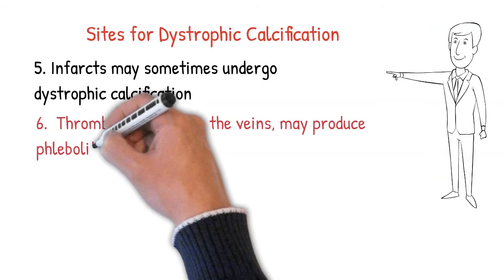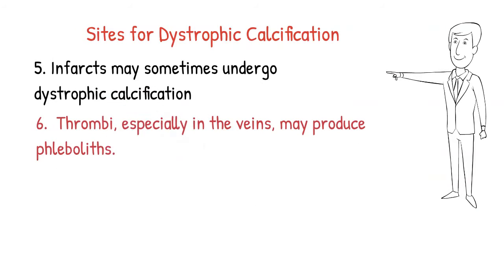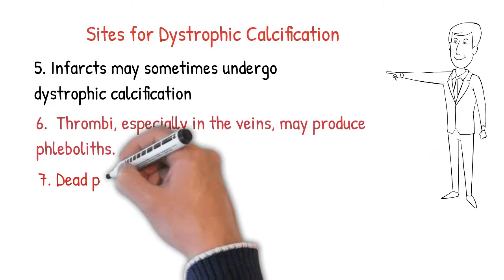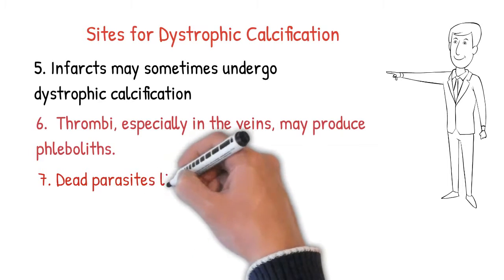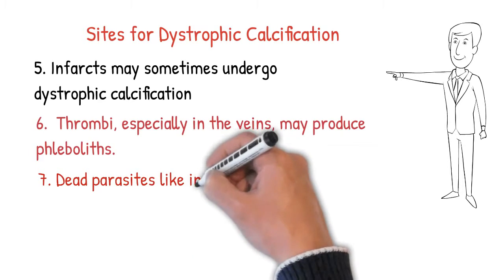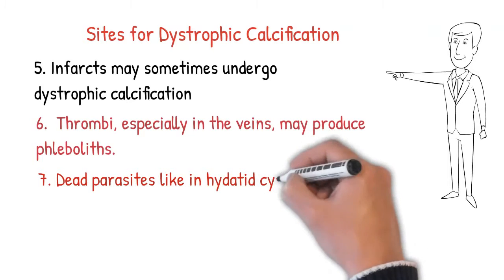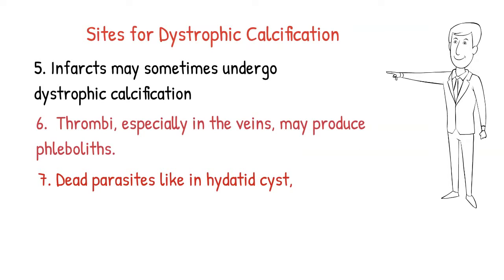In case of thrombi, there is a platelet plug and calcium is deposited inside, producing phleboliths — a stone inside the vessels. Calcification can also occur in dead parasites, like in a hydatid cyst caused by Echinococcus granulosus, which loves the liver and produces a cyst-like structure there.